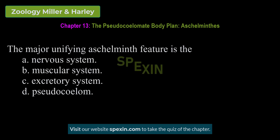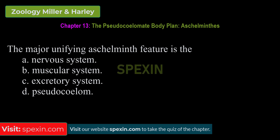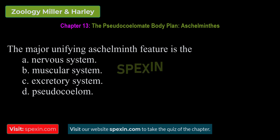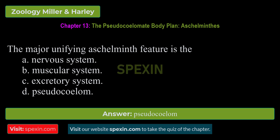The major unifying aschelminth feature is: A. Nervous system. B. Muscular system. C. Excretory system. D. Pseudocoelom. Correct answer: Pseudocoelom.